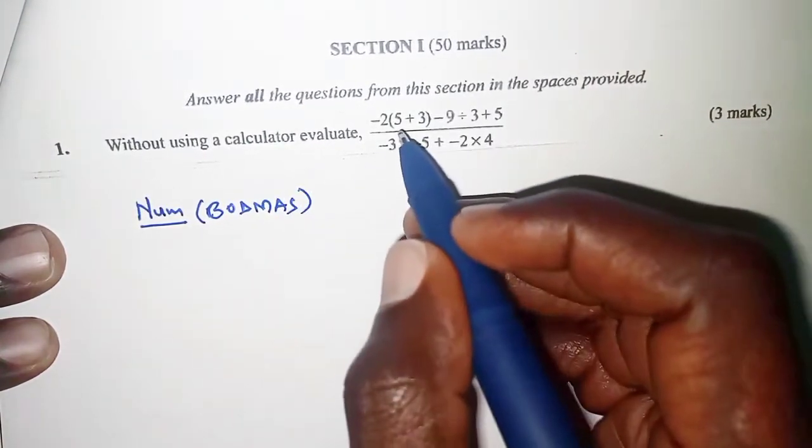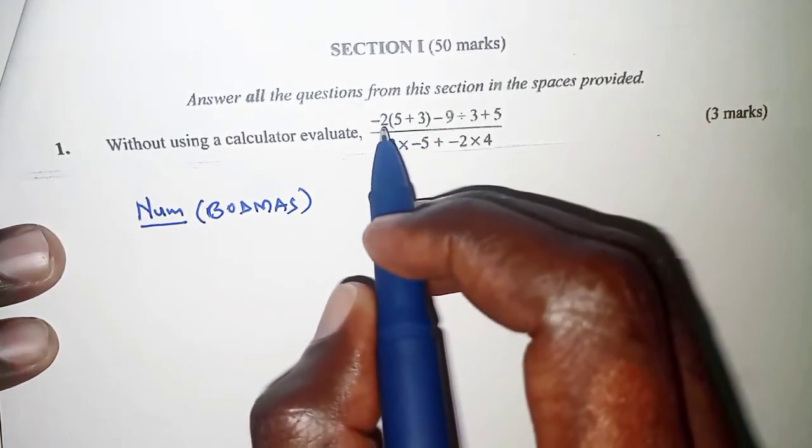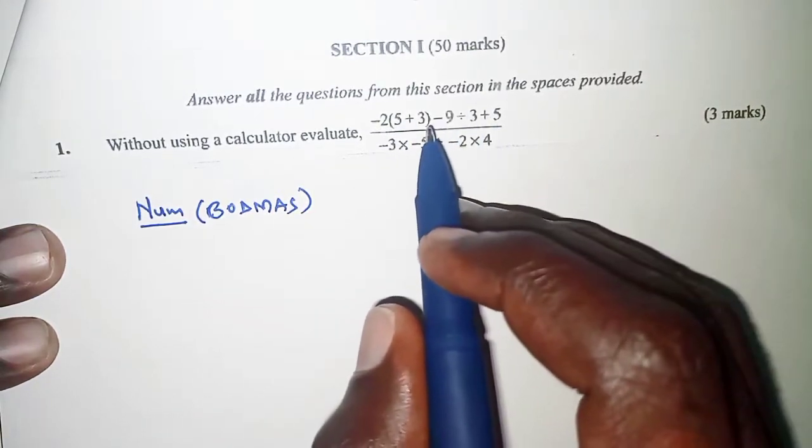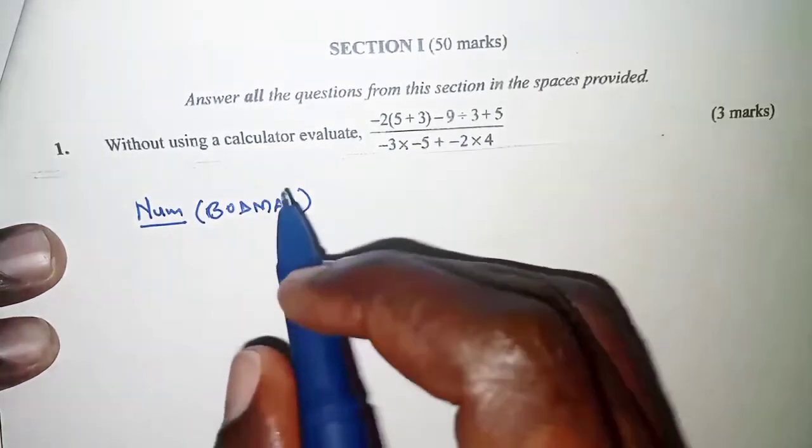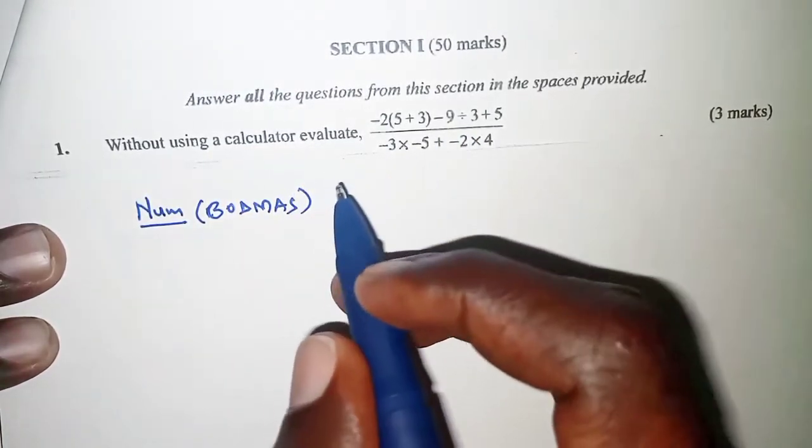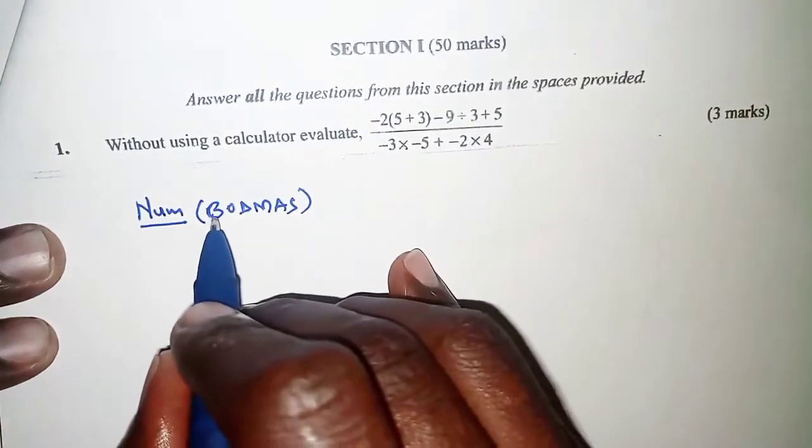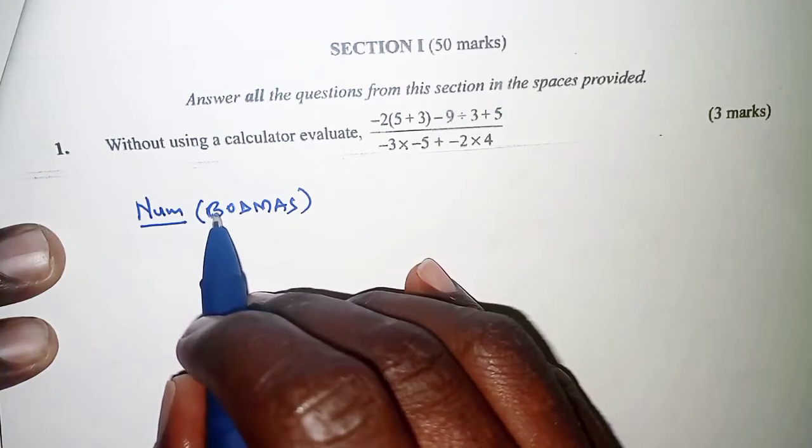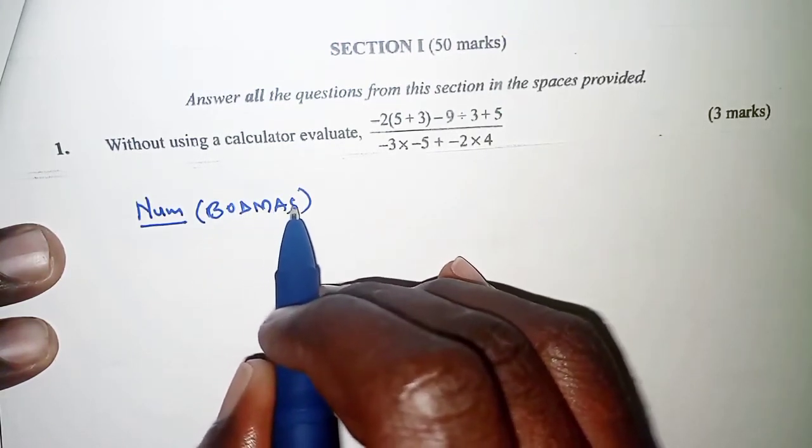We have mixed operations, in the sense that we have multiplication between negative 2 and the brackets. We have additions, we have brackets, and we have subtraction. In case where we have mixed operations, then we have to follow the order BODMAS, where B stands for brackets, then O for division, multiplication, addition, and subtraction.